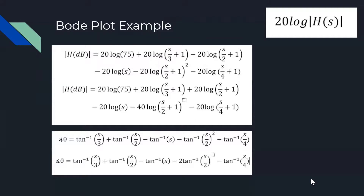We also have the phase equation, though we will not be plotting the phase diagram for this transfer function in the video. For 75 the phase angle is 0, so it is not included. The equation is: tan⁻¹(s/3) plus tan⁻¹(s/2) minus tan⁻¹(s) minus 2·tan⁻¹(s/2) — because the squared brings a factor of 2 to the front — and then minus tan⁻¹(s/4). The subtracted terms correspond to the poles of the transfer function.